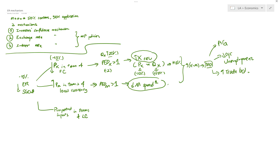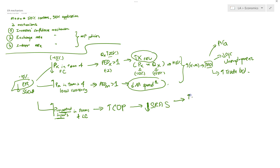However, there's always a counter-effect. When the exchange rate goes down, it also leads to an increase in the price of imported inputs in terms of SGD. This leads to an increase in cost of production because imported inputs are factors of production. This then leads to a decrease in the short-run aggregate supply curve, resulting in an increase in import-push inflation.